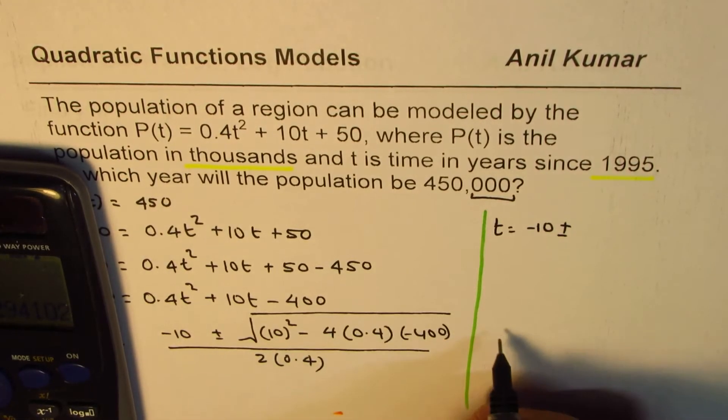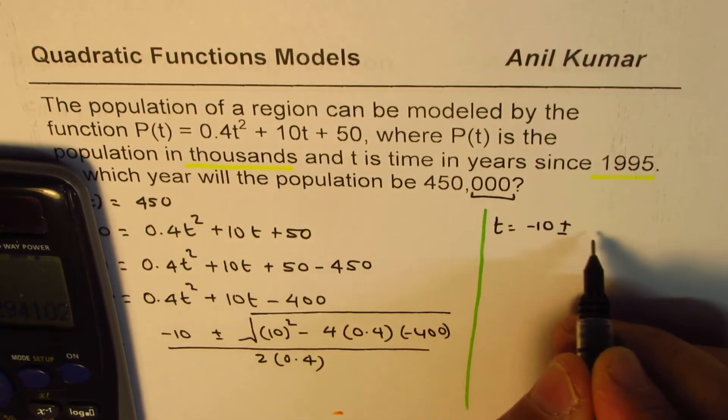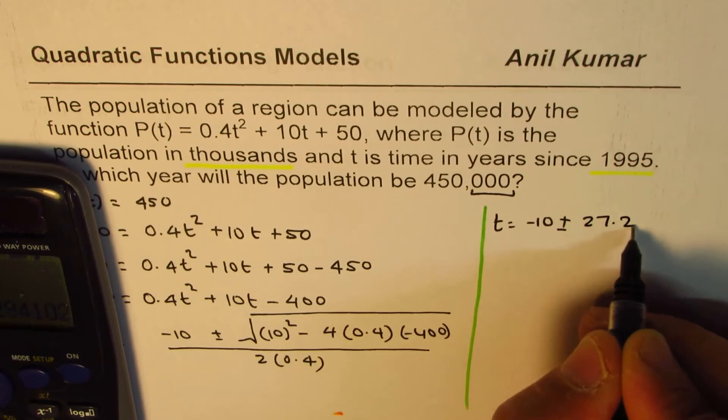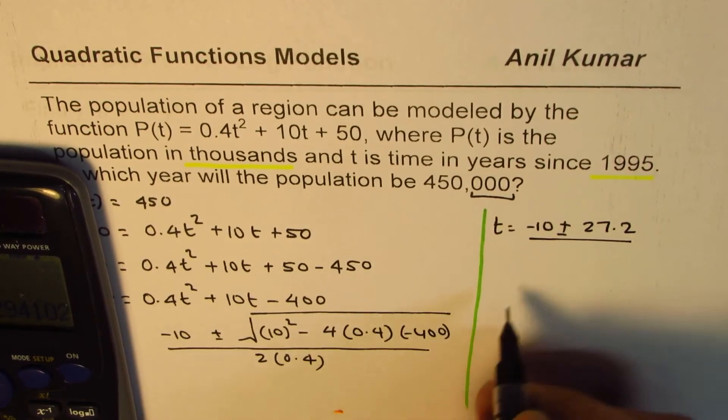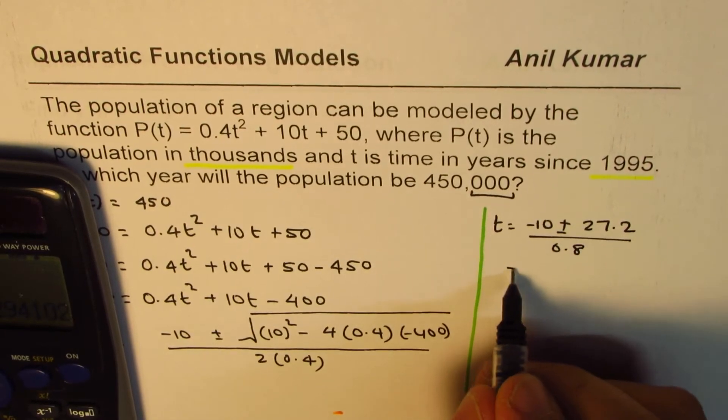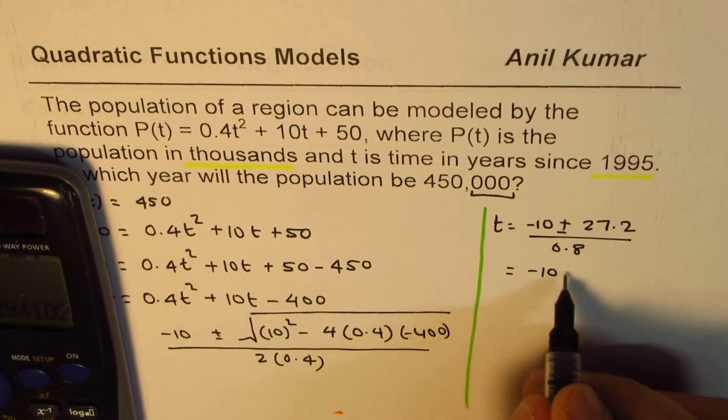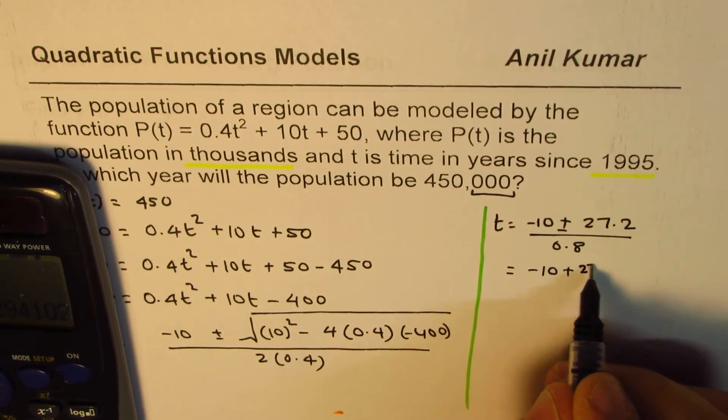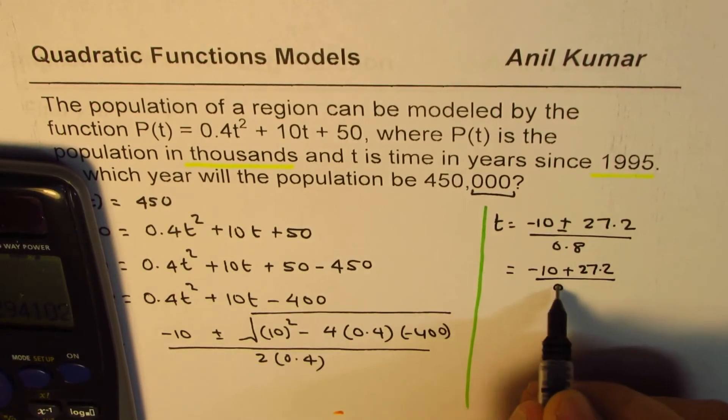So what we have here is 27.2 divided by 0.8. Is that okay? Now time has to be positive, so we will take the positive value. I mean add them, right? 27.2 over 0.8.